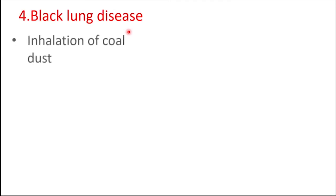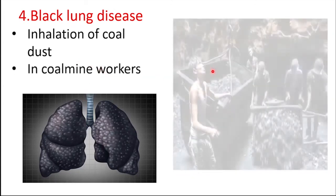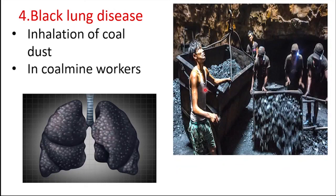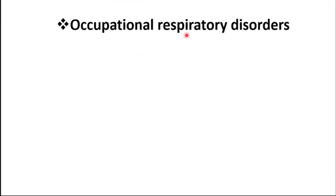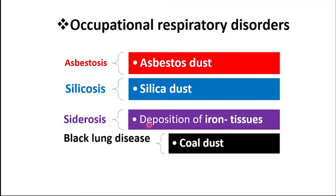The fourth occupational respiratory disorder is Black Lung Disease. It is the lung disease caused by inhalation of coal dust. Since coal dust is black, this disease is named Black Lung Disease. It is common in long-time coal workers. Asbestosis is caused by inhalation of asbestos dust, Silicosis by silica dust, Siderosis is due to the deposition of iron particles in different tissues of the body, and Black Lung Disease is caused by the inhalation of coal dust.